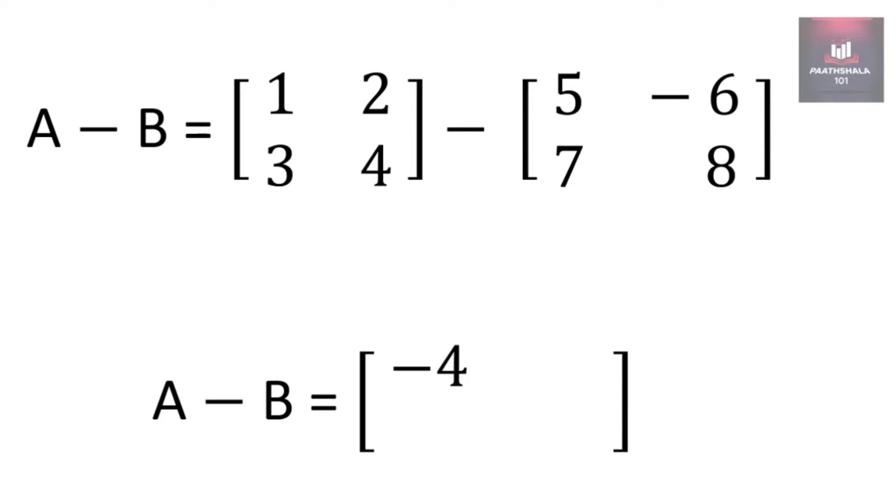For first row, second column of A minus B, we will select first row, second column of A and first row, second column of B, that is 2 and minus 6. So 2 minus minus 6 will become 8.